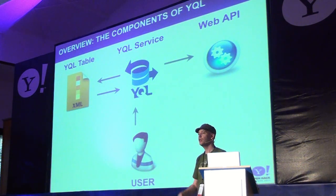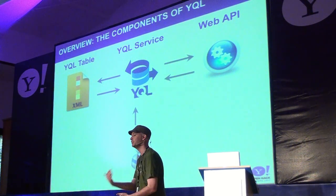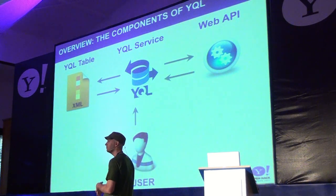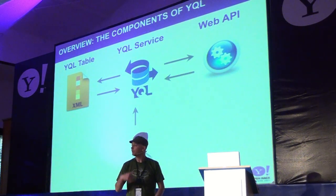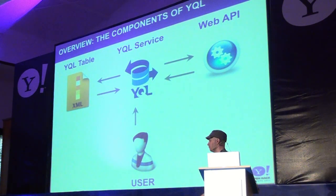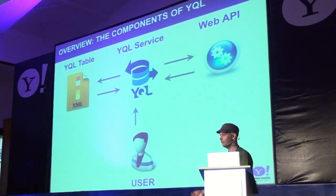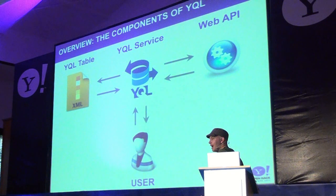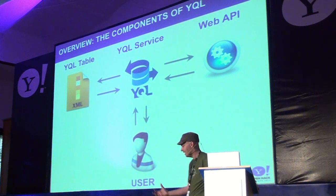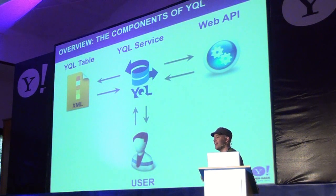The web service responds back with the Flickr photos. YQL takes this information and might manipulate the data — if you have server-side JavaScript built into your table, it might only return a certain number of results. But it will always push the data back in a uniform format like JSON or XML. You can have a feed dumping geographical information in Google's KML format, for instance, and it can convert it. That information all comes back to the user in a nice response, without you having to do a lot of that heavy lifting.